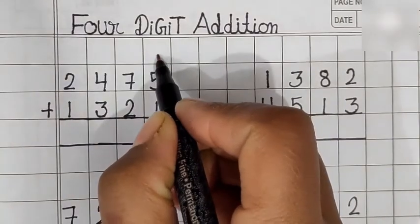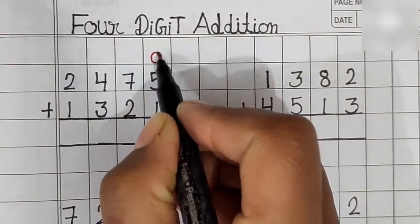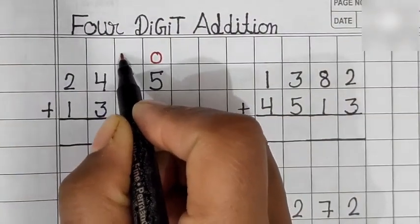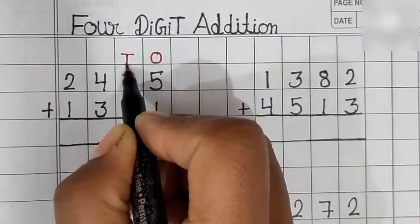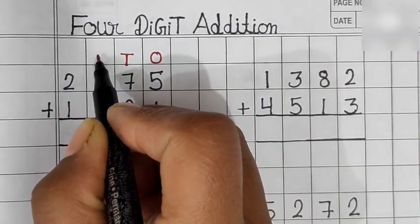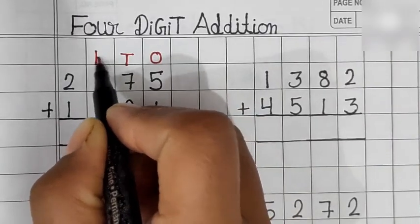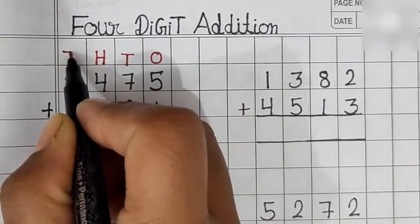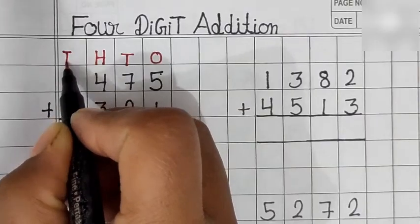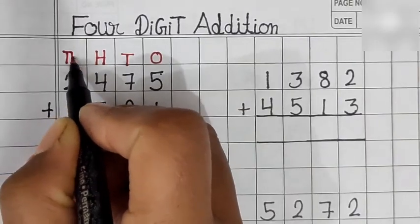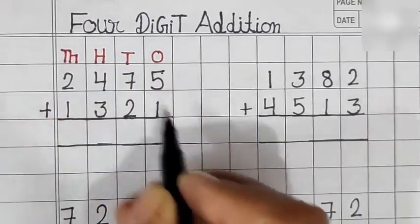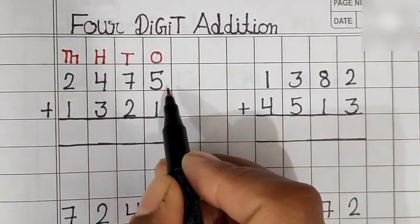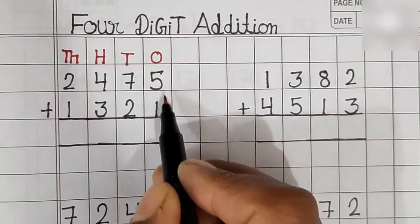This is the 1s place, this is the 10s place, this is the 100s place, and this is the 1000s place. Let's start with the 1s place first.